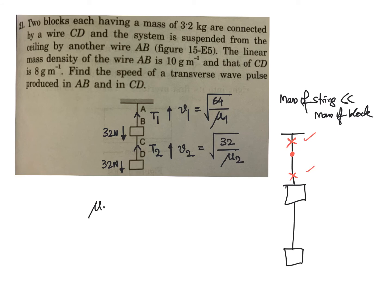So what is mu1, the mass per unit length of the upper rope? mu1 is given as a variable: 10 grams, so 10 into 10 to the power minus 3 kg per meter.